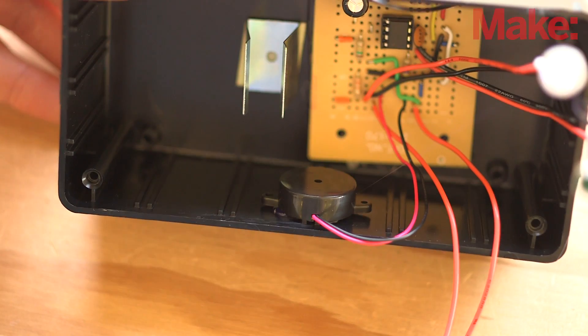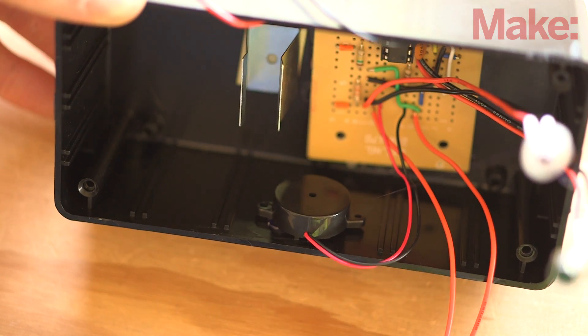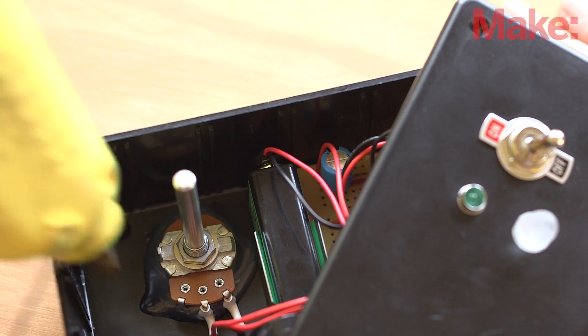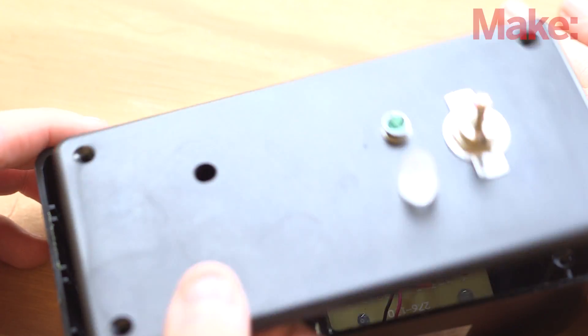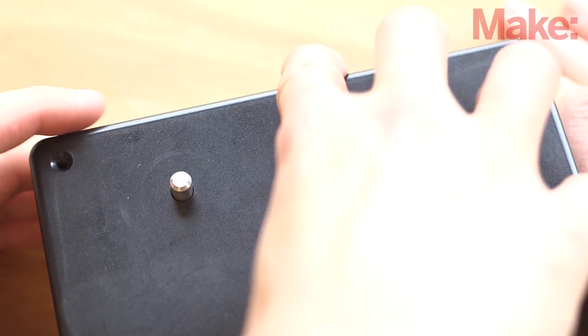Next up is the piezo buzzer. A little hot glue on the back and simply press it in place. The last component to be mounted is the potentiometer. It's held in place with another dab of hot glue.